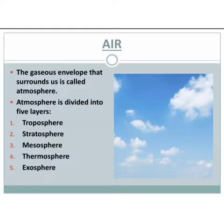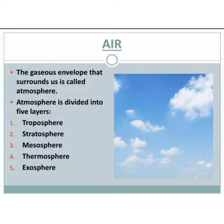Coming to air — we know that it is a gaseous envelope that surrounds us, that is the atmosphere. This atmosphere is divided into five layers: troposphere, stratosphere, mesosphere, thermosphere, and exosphere. We shall study this in the next video, as there are more slides remaining. I'll end here and continue in the next video. Thank you.